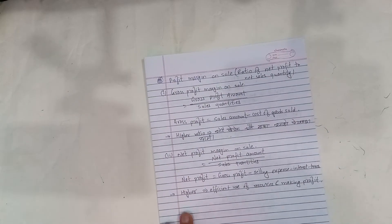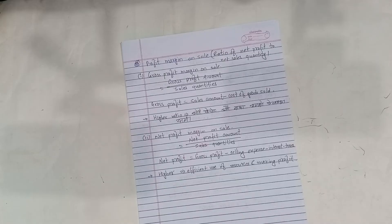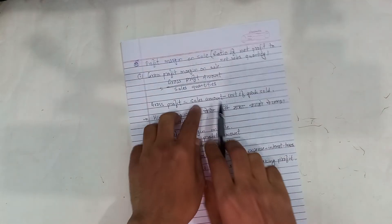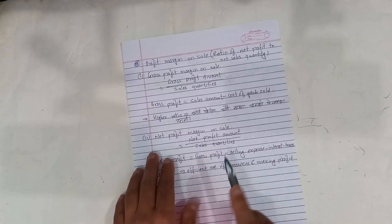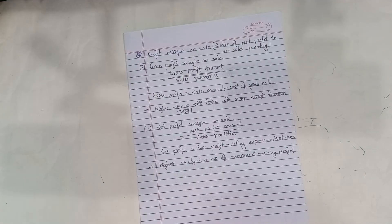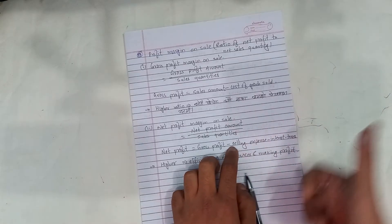Other ratios include profit margin on sales — the ratio of net profit to net sales. There is also gross profit margin on sales: gross profit divided by net sales. Gross profit is sales amount minus cost of goods sold. A higher ratio indicates the firm is generating more profit on its sales, which reflects strong performance in the market.